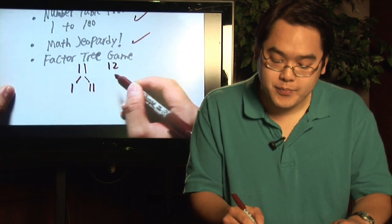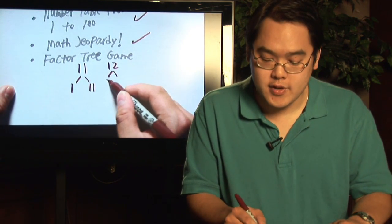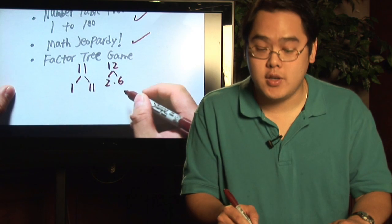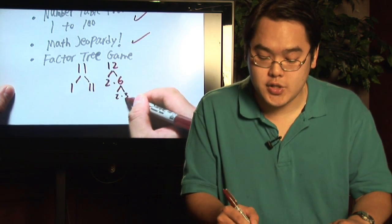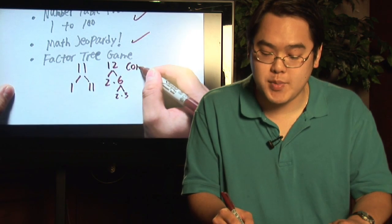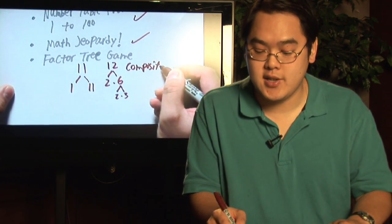But if you have a number like 12, where you have 2 times 6, you see that 6 can be broken down further into 2 times 3. So you have an example of 12 as being a composite number.